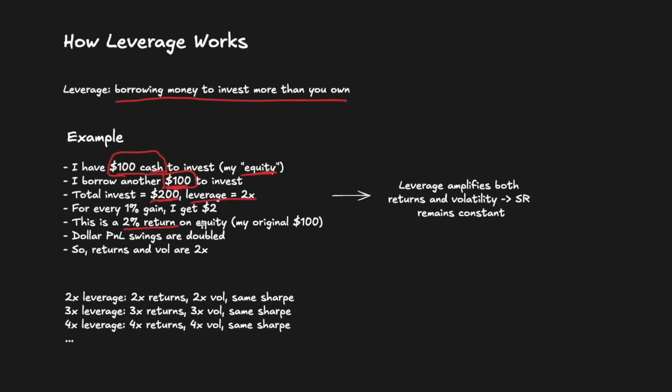In other words, dollar P&L swings are doubled, and so returns are doubled. You earn 2% rather than 1%. It's not too hard to show that volatility is also doubled, and that's because if the investment increases by 1%, you get $2, but on the flip side, if it decreases by 1%, you also lose double, or you lose $2. So the key point here is that leverage amplifies both returns and volatility in a financial or investment context, and so Sharpe ratios remain constant. So if you took 2x leverage, you'd have 2x the returns, 2x the vol, but the Sharpe would remain the same. Same applies for 3x leverage, 4x leverage, or whatever other leverage that you took.